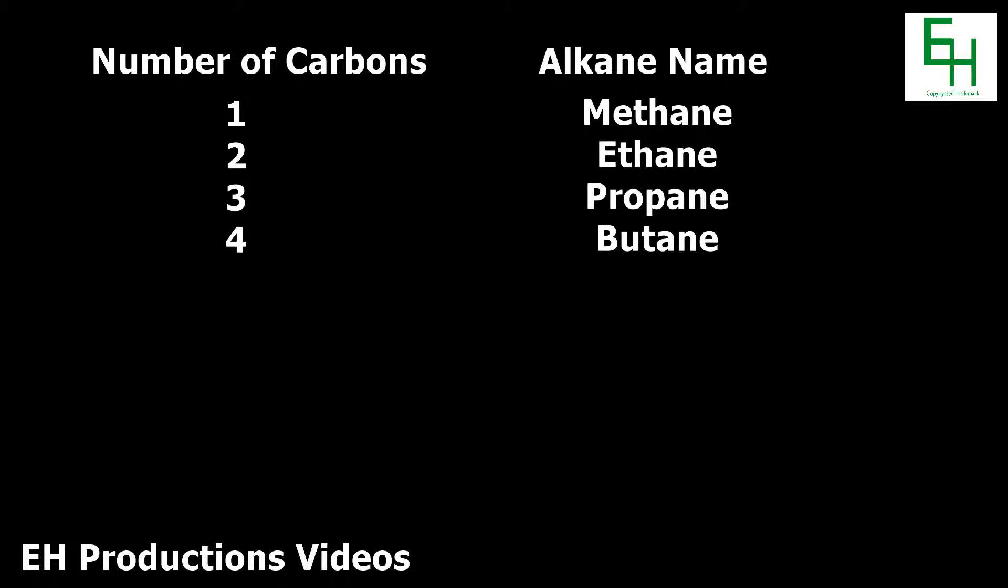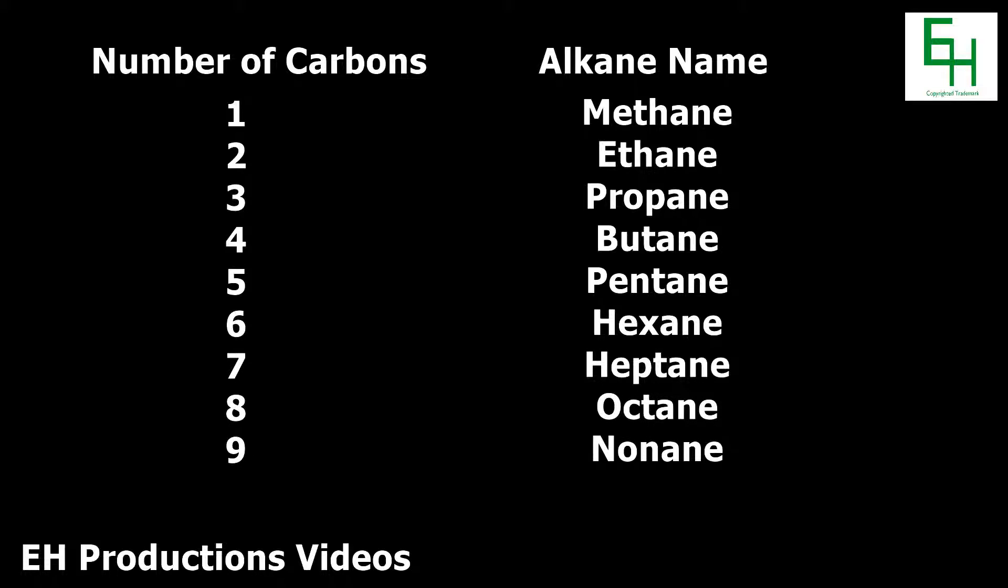After butane, you name alkanes similarly like you name shapes. So an alkane with five carbon atoms would be called pentane, just like you would call a five-sided shape a pentagon, because penta means five. So six carbons would be hexane, seven would be heptane, eight would be octane, nine would be nonane, and lastly, if it contains ten carbon atoms, it would be decane.